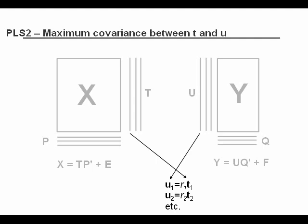So this is really the heart of PLS. This is what defines PLS. It finds components in such a way that their score values have maximum covariance. U1 has maximum covariance with T1, U2 has maximum covariance with T2, etc.